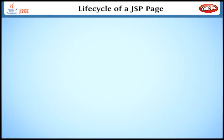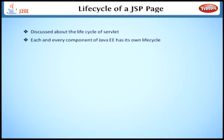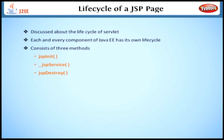We have already discussed the needs and benefits of Java Server Pages. In the previous chapters, we discussed the lifecycle of Servlet. Now we will discuss the lifecycle of a JSP page. Each and every component of Java EE has its own lifecycle. The lifecycle of a JSP consists of three methods: the jspInit method, the _jspService method, and the jspDestroy method.